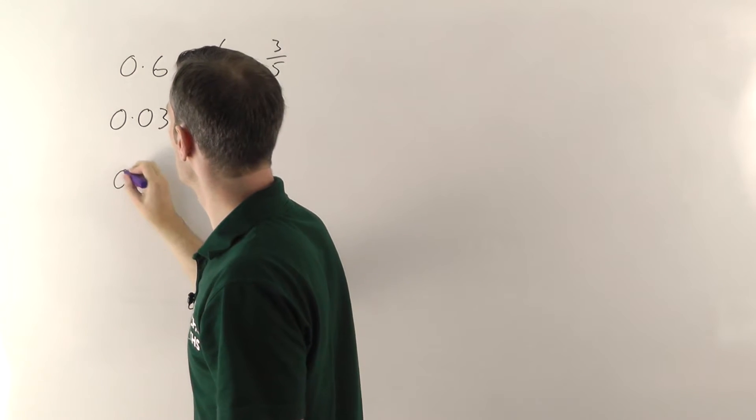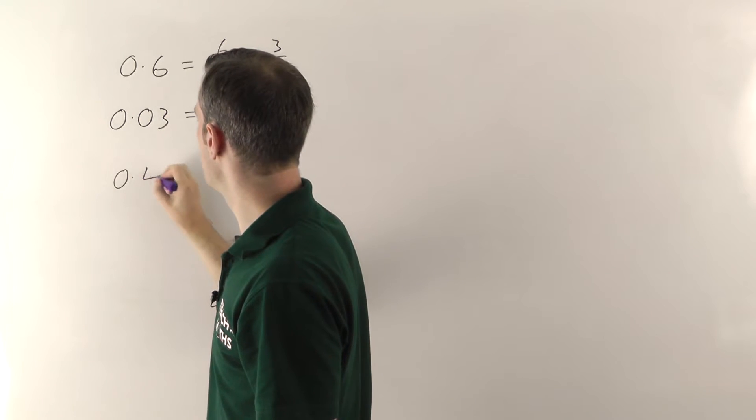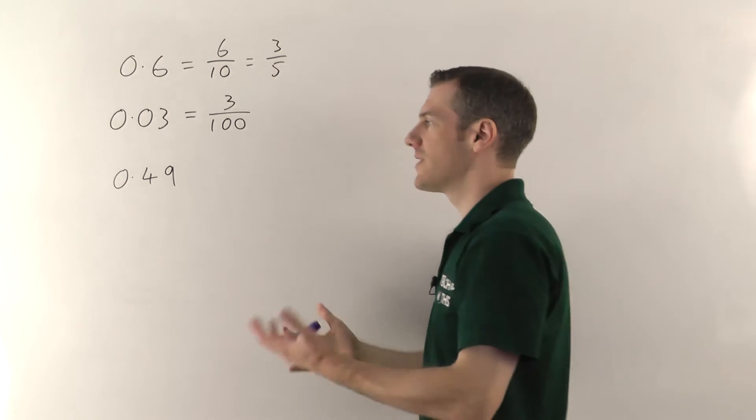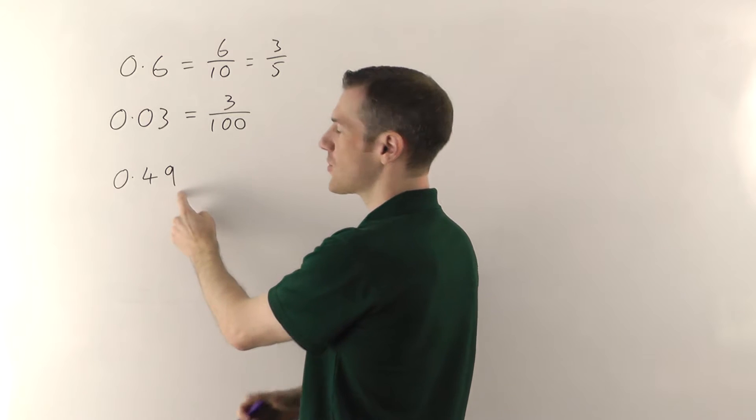Now, if you've got a number with more than just a single digit here. So if you had 0.49, for example. In general, when you're converting decimals into fractions, all that really matters is what position the furthest column is.